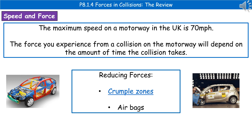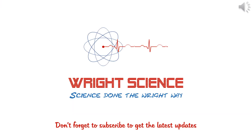We also have airbags, which work on the same idea. They inflate so that rather than your head hitting the steering wheel, the dashboard, or other hard surfaces and coming to a rapid stop, you hit something that deflates slightly, allowing you to come to a slower stop and thereby reducing the forces acting on you. Hopefully at the end of this video you can explain the dangers caused by large decelerations and talk about ways that car manufacturers have tried to reduce these forces.